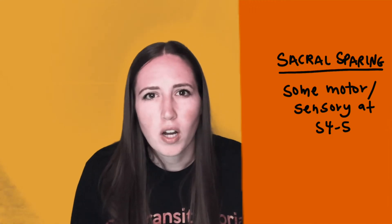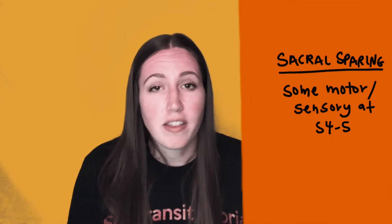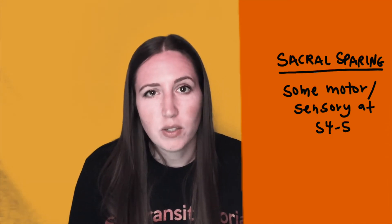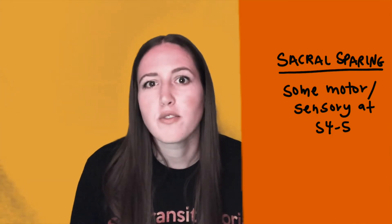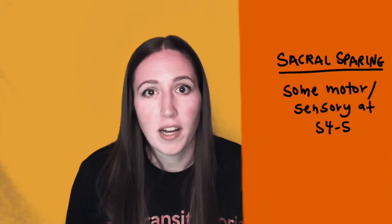The overall neurologic level is the lowest level that has both motor and sensory. So if you have a motor level of C5 and a sensory level of C6, you're going to pick the higher one. Now with some incomplete injuries, you can get what's called sacral sparing, which means that the innermost part of the spinal cord is still preserved enough to have either sensory or motor function all the way down to the sacral region — S4 and S5, which is your groin area.